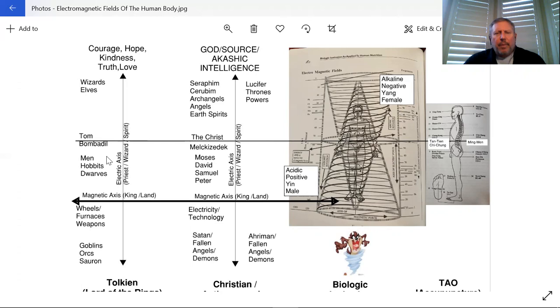If we get back to the diagram here, we have this middle ground. We also have the magnetic axis, which we call the king-land axis. This is the land, this is Arthur. This is where the king resides in the land, as we've talked about. This is male, this is acidic, this is positive.